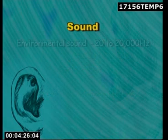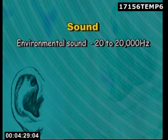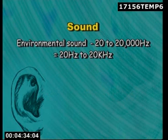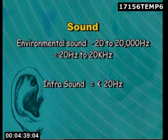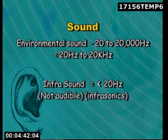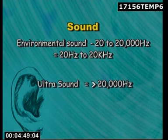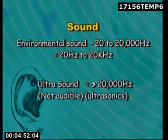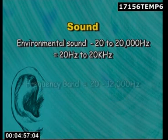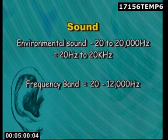Environmental sound ranges from 20 to 20,000 Hertz (20 Hz to 20 kHz). It can be regrouped into the following: infra sound, which is less than 20 Hz — it is not audible and also called ultrasonics — and the audible frequency band, which is 20 to 12,000 Hertz.